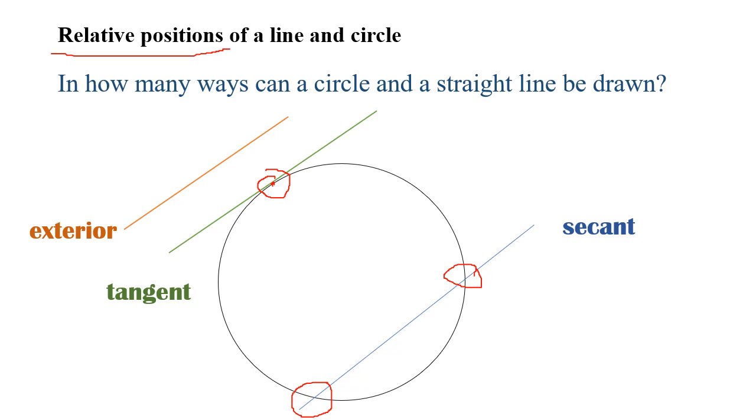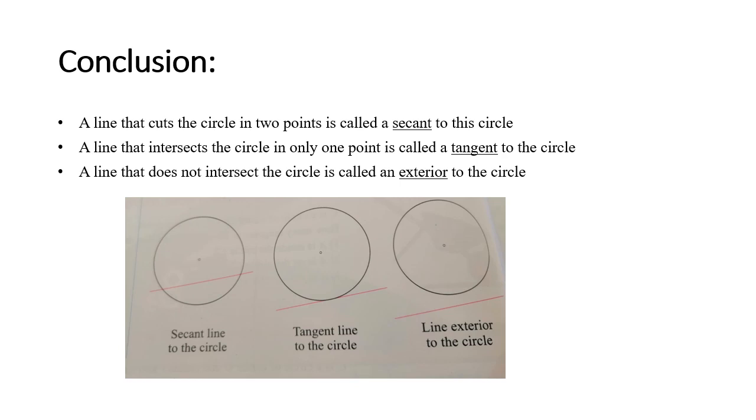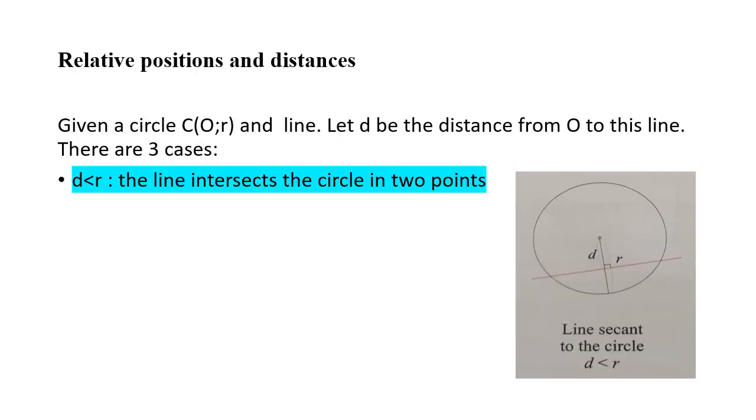So as a conclusion: a line that cuts the circle in two points is called a secant, one point is called a tangent, and no points is called exterior. Now relative positions and distances: given a circle C with center O and radius r.